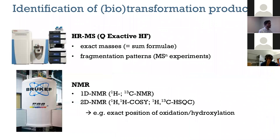The technologies we use for identification of transformation products are high-resolution mass spectrometry. My lab at Johns Hopkins has a Q-Exactive HF, which is an Orbitrap high-resolution mass spectrometer. This allows us to determine exact masses and come up with the molecular formula of compounds. We can also do fragmentation experiments to get information about chemical structure and the changes happening. In addition, we do NMR — both 1D and 2D NMR — which gives an exact 3D picture of the compound, so we can say, for example, exactly at which position of the molecule a hydroxylation is taking place.